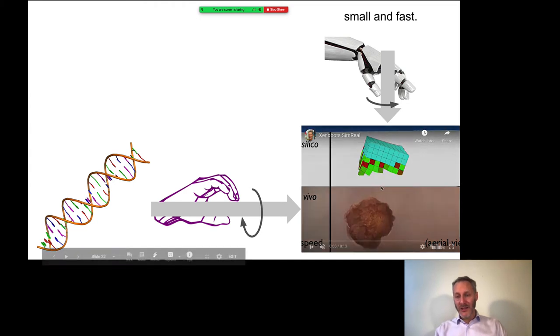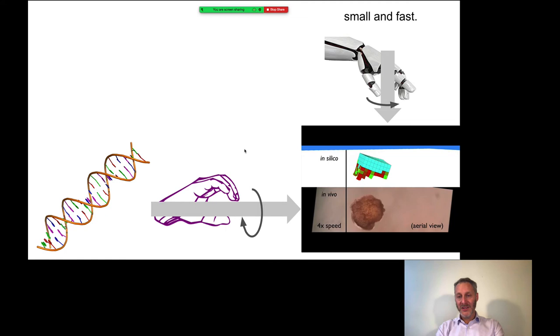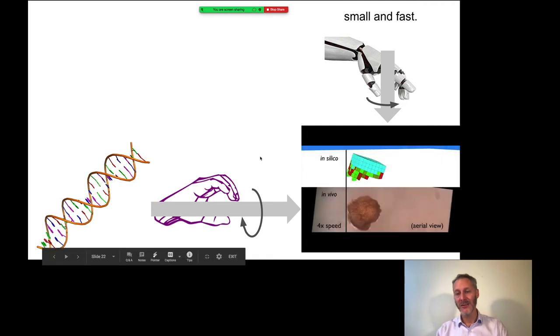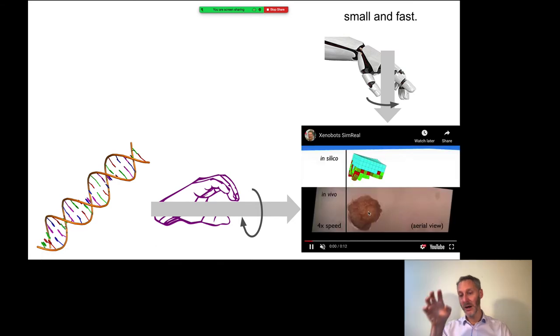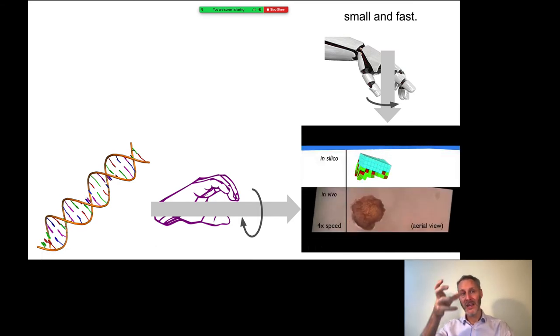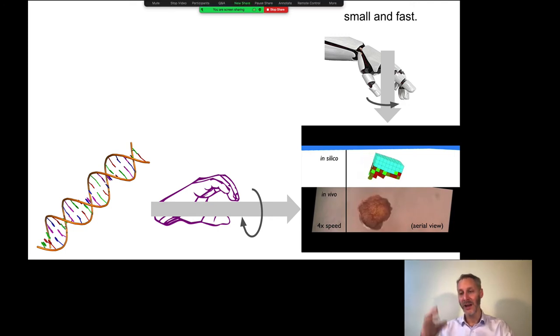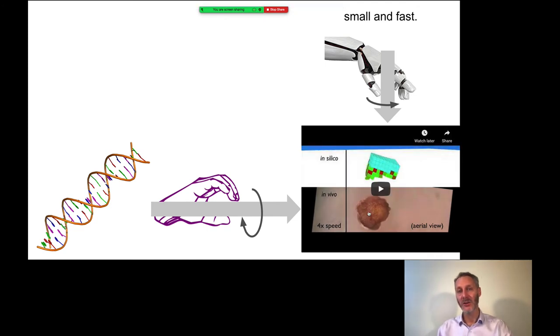At the end of this process, in this case, we got the following xenobot that you see in the bottom. Its shape doesn't match the shape of the evolved design perfectly and its way of moving also doesn't match the way of moving of the simulated design either, but the match is pretty good. We did some statistical comparisons between similarity of shape and similarity of function and it's much better than you would expect by chance. This is not a random bundle of skin and heart muscle tissue. If you take this xenobot, which we're basically looking at from above, if you take it and flip it on its back, it will no longer move. A simple way to demonstrate that its form predicts its function. The shape dictates how it's going to move.